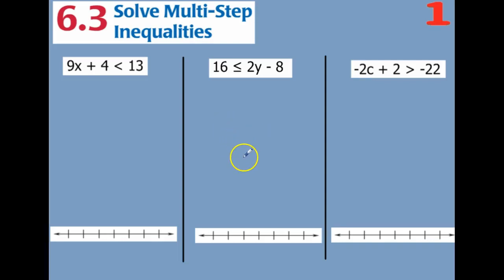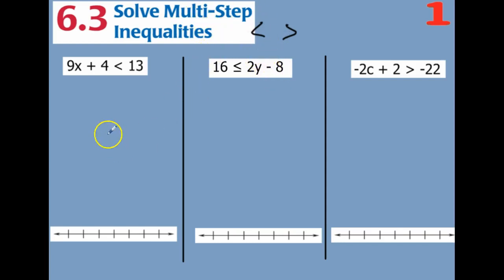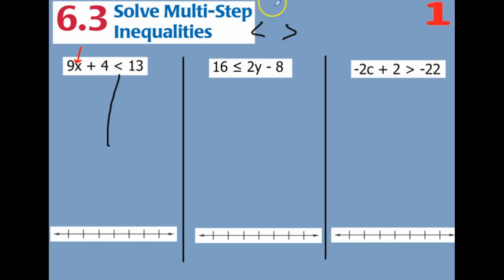Good morning. Today we are continuing to solve inequalities with our less-than and greater-than symbols. We're doing multi-step inequalities today. So we're going to still solve like a regular equation. Draw your line down wherever the symbol is, and we need to get the letter all by itself. Remember, we're doing our order of operations backwards.